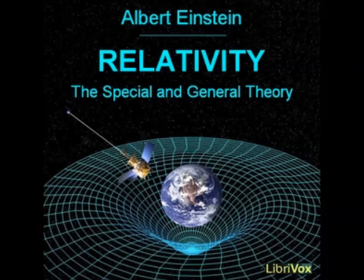It is obvious that the same effect would be noted by an observer sitting alongside his clock at the center of the circular disk. Thus, on our circular disk, or, to make the case more general, in every gravitational field, a clock will go more quickly or less quickly according to the position in which the clock is situated, at rest. For this reason, it is not possible to obtain a reasonable definition of time with the aid of clocks which are arranged at rest with respect to the body of reference.